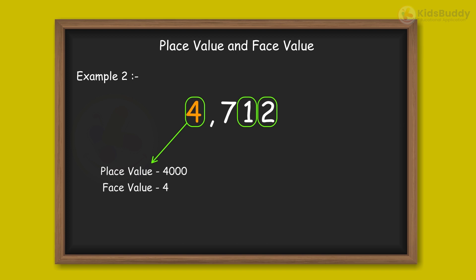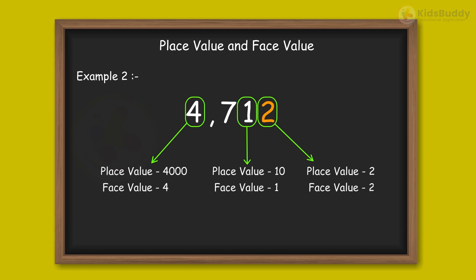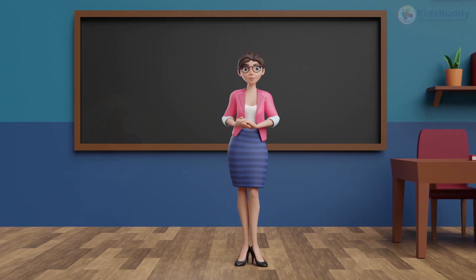Next, the place value of the digit 1 is 10, as it is in the tens place, and its face value is 1. Lastly, the place value of the digit 2 is 2, and its face value is also 2. Look! We found the answer! Wasn't it easy to understand the place value and face value of a digit?